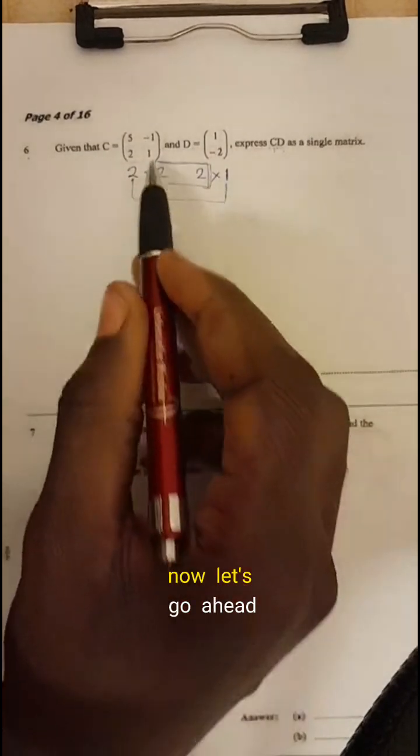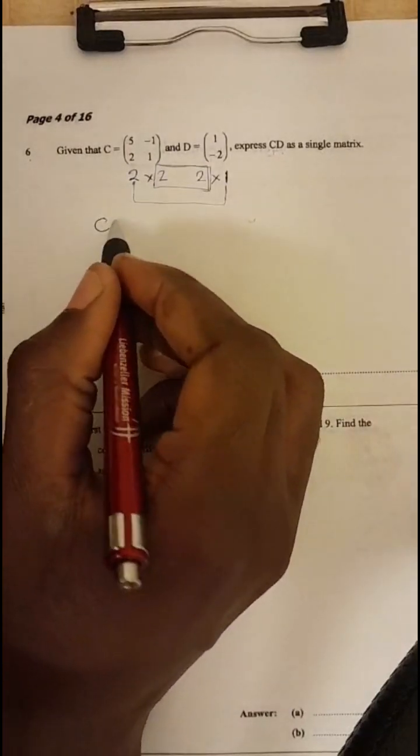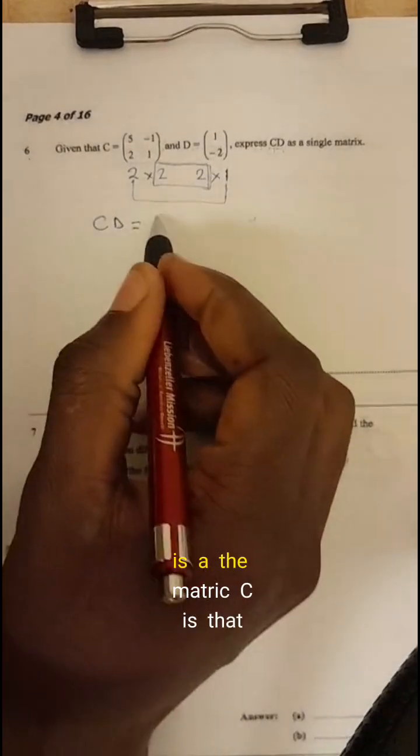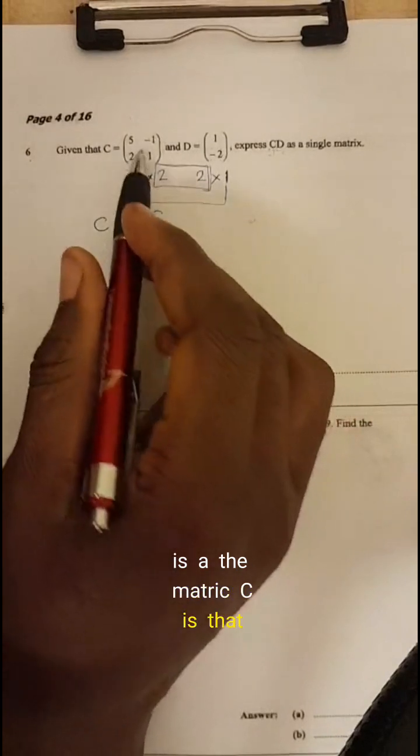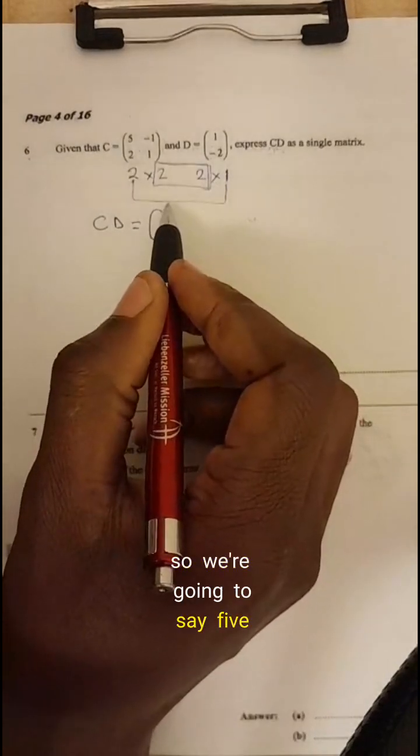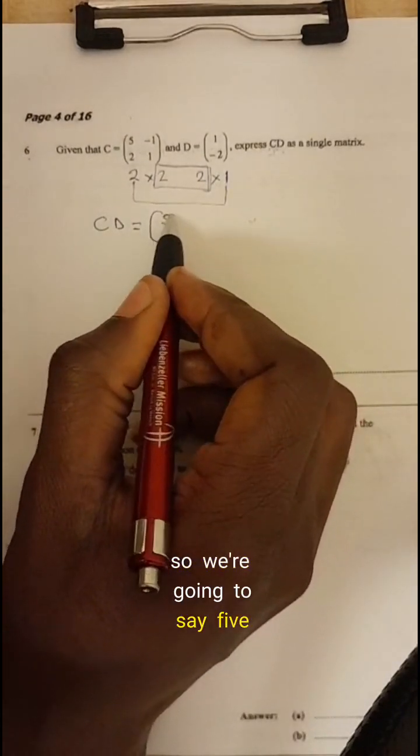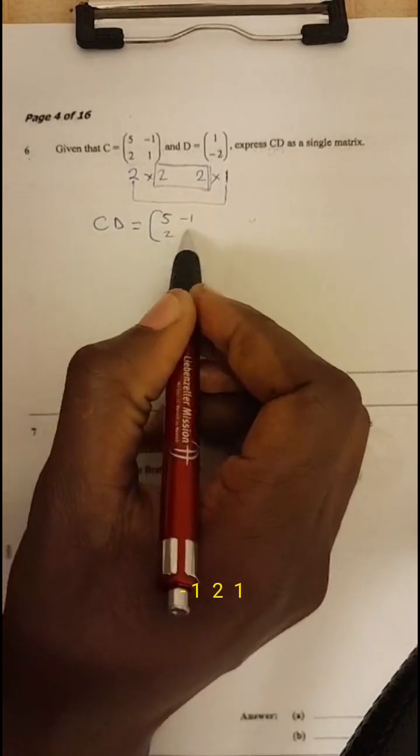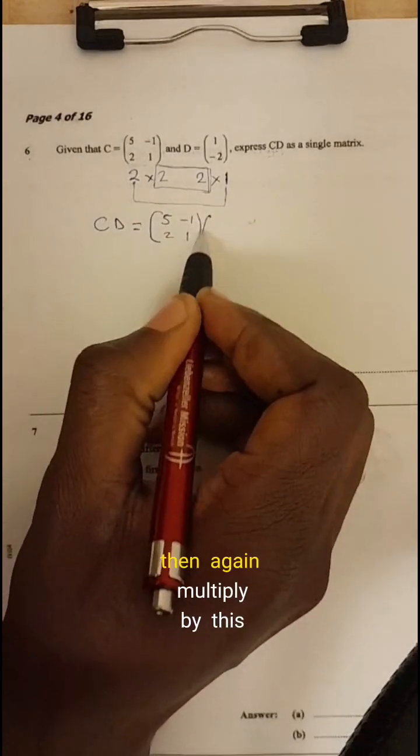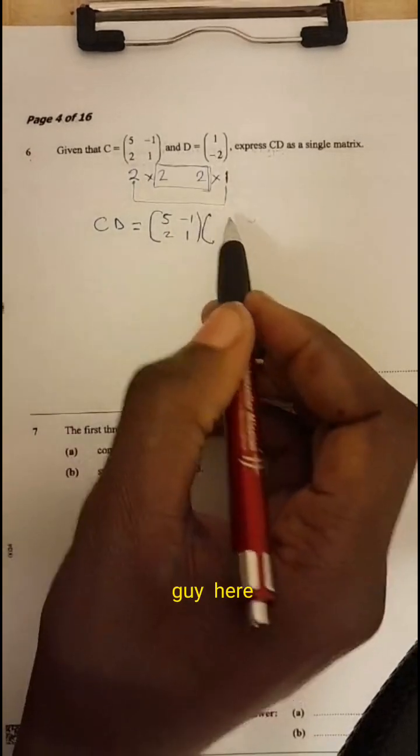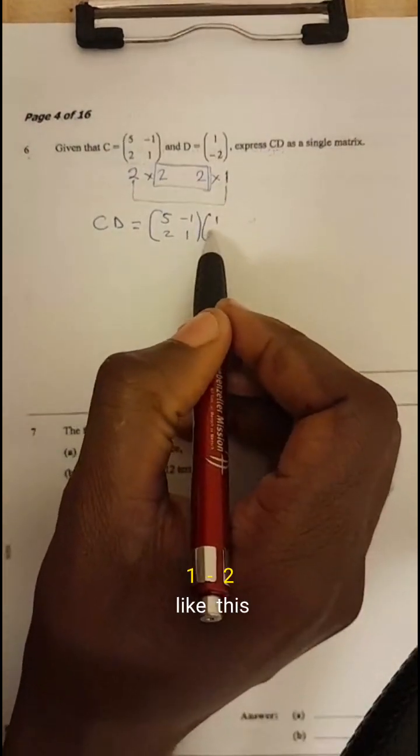So now let's go ahead and find CD. So CD is, the matrix C is that, so we're going to say five, negative one, two, one, then again multiplied by this guy here, one, negative two.